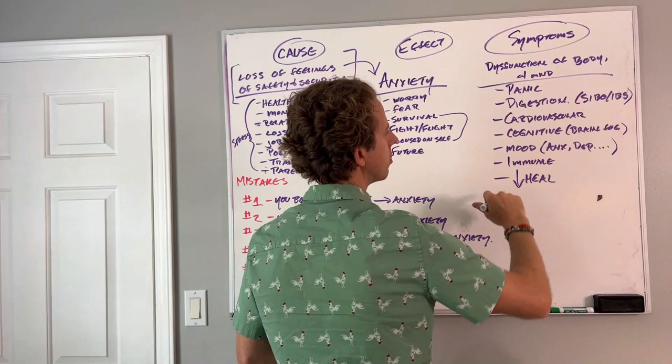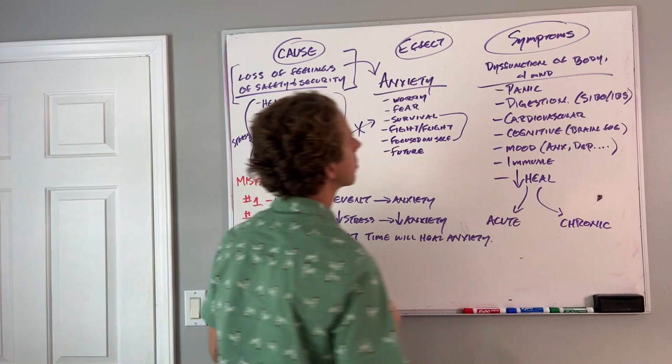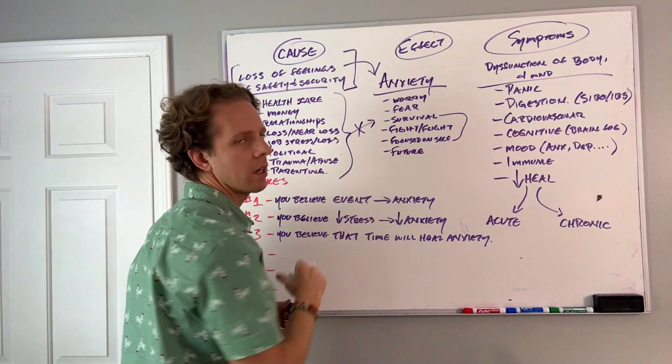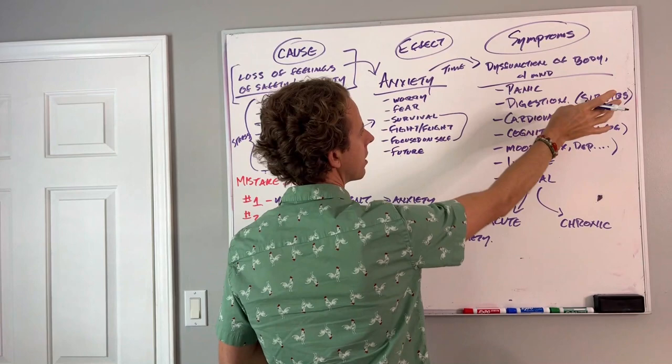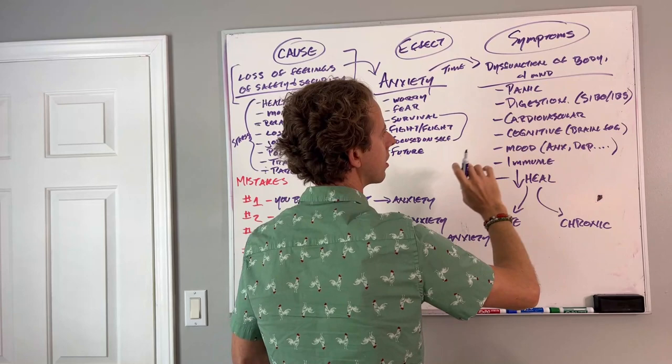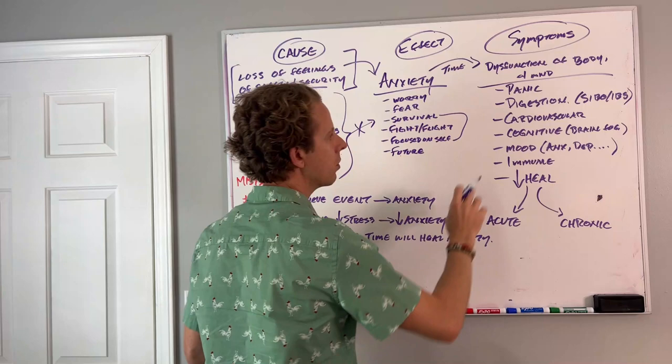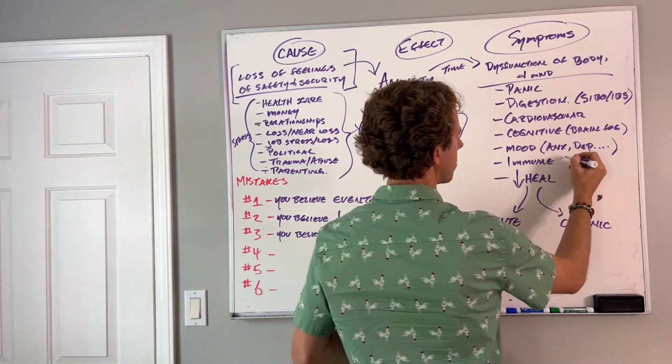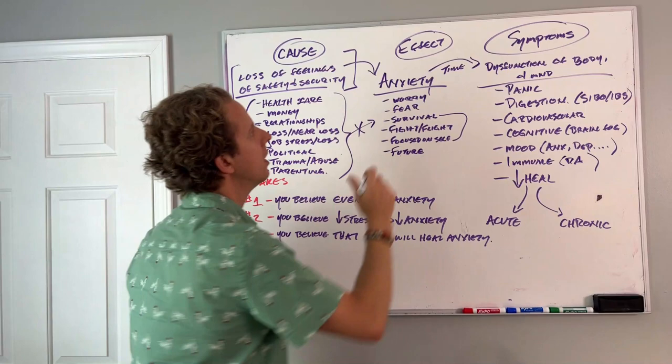These different types of issues can show up as acute issues. They can also show up as chronic issues. So loss of safety and security ends up creating anxiety. Anxiety over time ends up leading to dysfunction of the body and the mind. We end up with panic attacks, digestive issues, tachycardia and arrhythmias and high blood pressure, cognitive issues and brain fog and poor memory, slow reaction time, disorientation, difficulty focusing. We end up with mood issues, immune and autoimmune issues. A lot of people end up seeing RA. We could put histamine issues in here too.